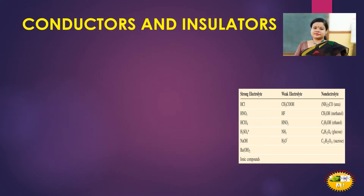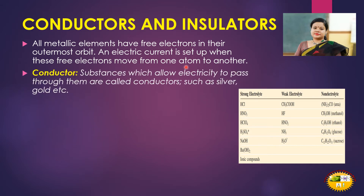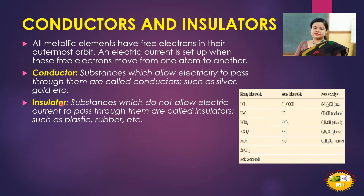All metallic elements have free electrons in their outermost orbit, so they can transfer these electrons from one atom to another. An electric current is set up when these free electrons move from one atom to another. Conductors are substances which allow electricity to pass through them, like silver and gold. Insulators are substances which do not allow electric current to pass through them, like plastic and rubber.